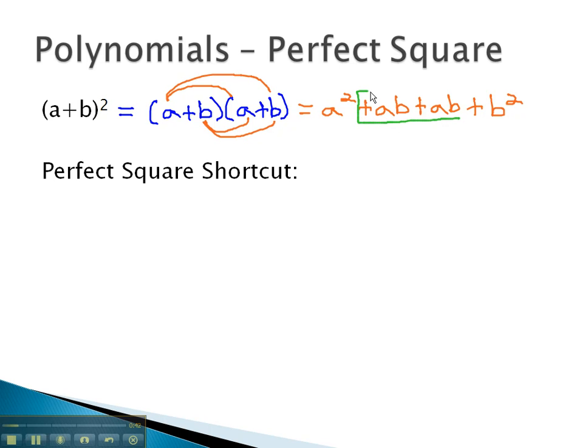Notice the like terms in the middle are exactly identical. Those like terms in the middle come from multiplying the a and the b together, and it's there twice. For this reason, we have a middle term which is twice the product of ab, combining the like terms, plus b squared.